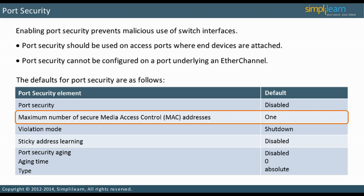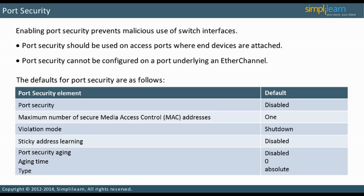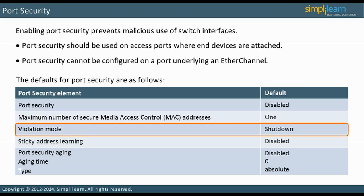Although this is the case most often, when VoIP is used, the phone and the PC are often connected on the same switch port, requiring two MAC addresses — one for the phone and one for the PC. By default, if there is an attempt to associate more than the configured number of MAC addresses to an interface, a violation occurs and the port is shut down.